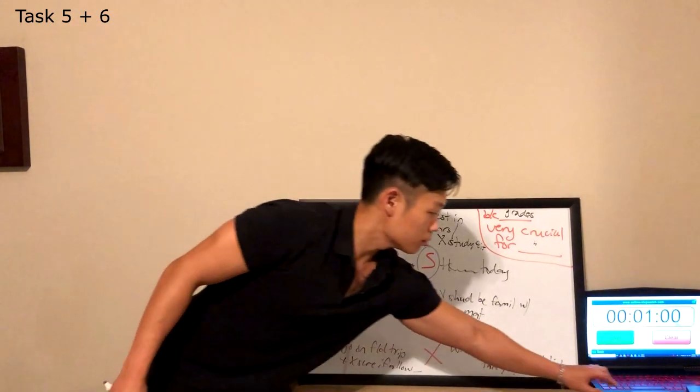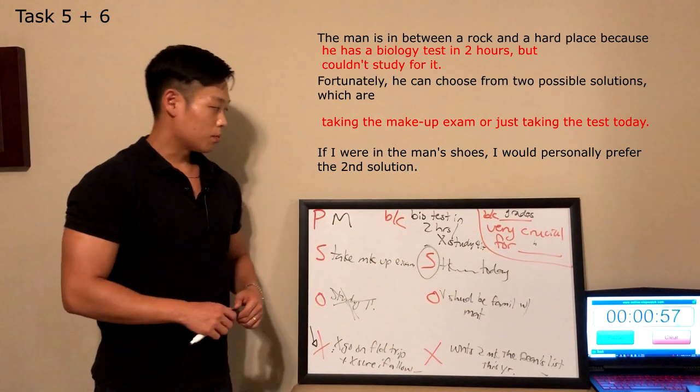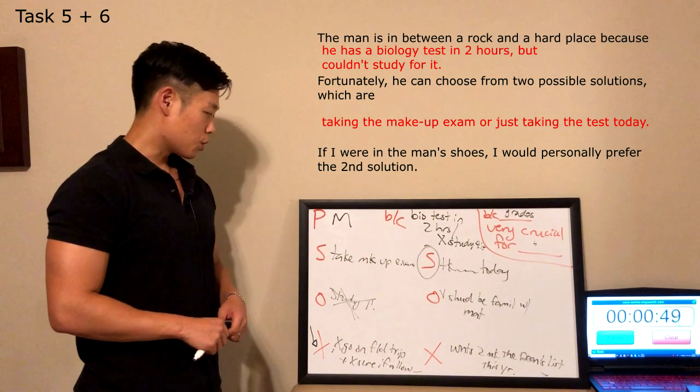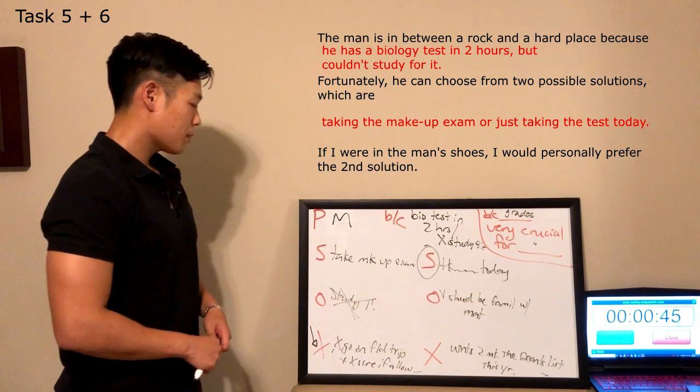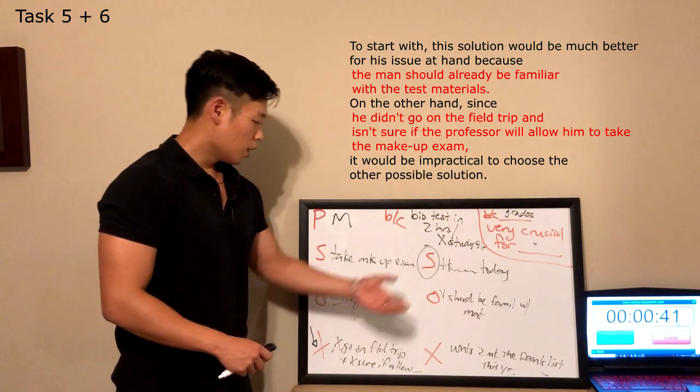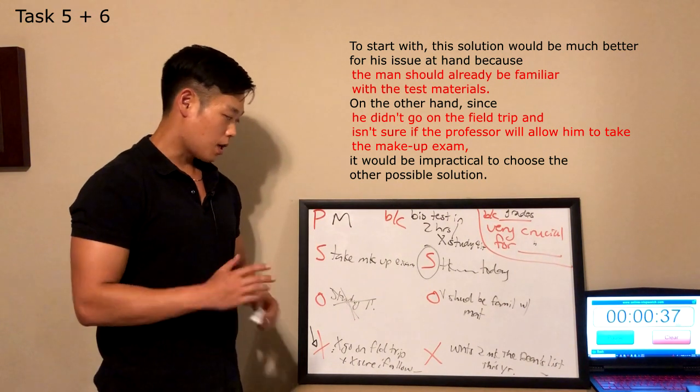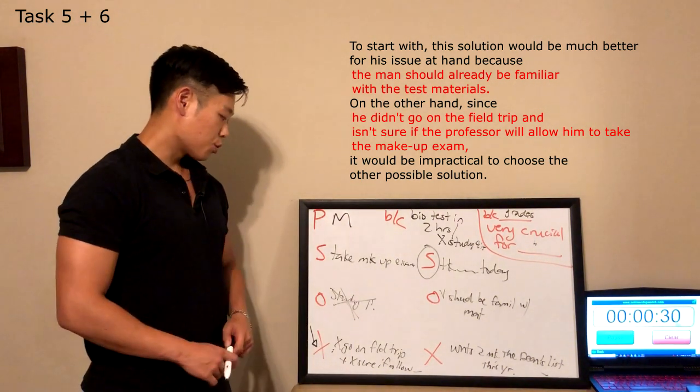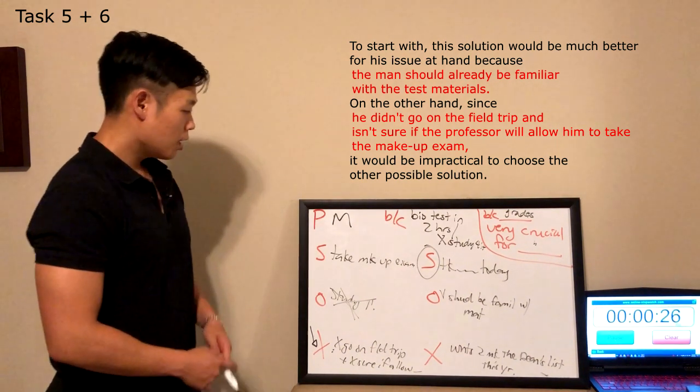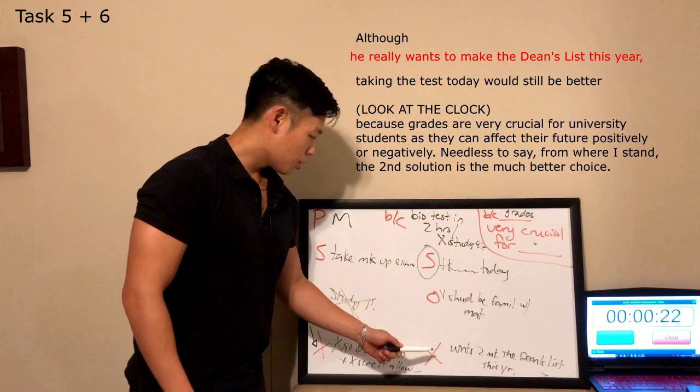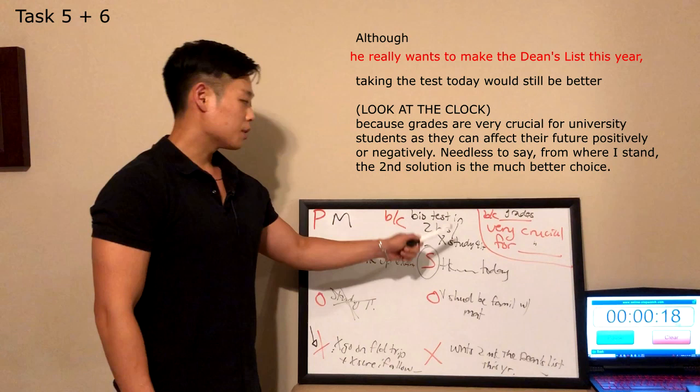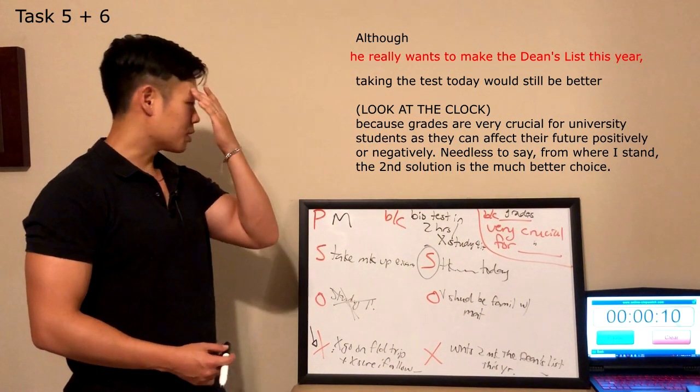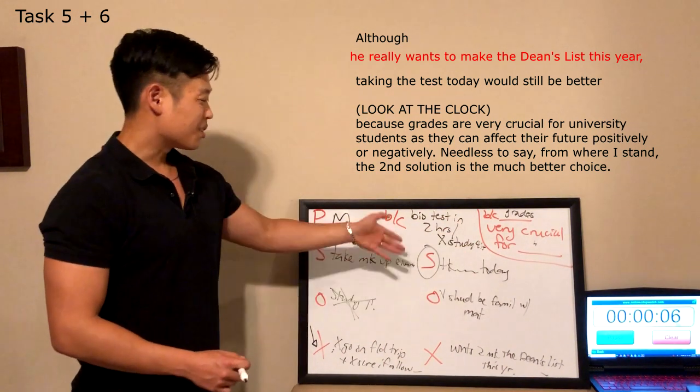The man is in between a rock and a hard place because he has a biology test in two hours but could not study for it. Fortunately, he can choose from two possible solutions which are taking the makeup exam or just taking the test today. If I were in the man's shoes, I would personally prefer the second solution. To start with, this solution would be much better for his issue at hand because the man should already be familiar with the test materials. On the other hand, since he did not go on the field trip and is not sure if the professor will even allow him to take the makeup exam, it would be impractical to choose the other possible solution. Although the man really wants to make the Dean's list this year, taking the test today would still be better because grades are obviously very crucial for university students as they can affect their future positively or negatively. Needless to say, from where I stand, the second solution is the much better choice for these reasons.